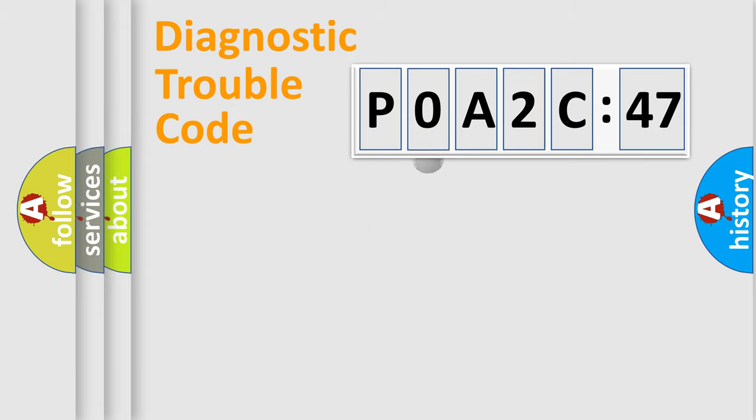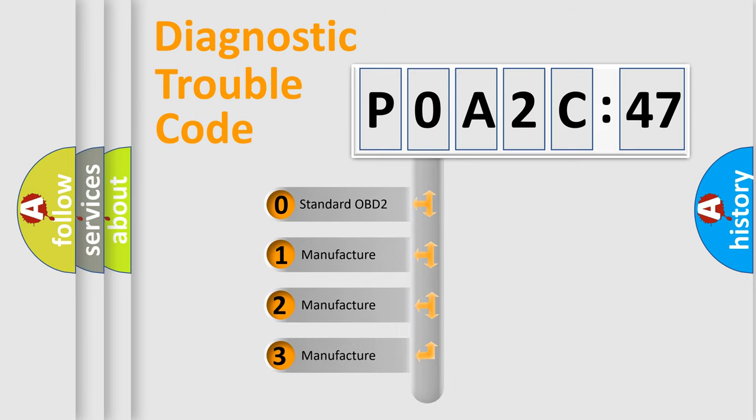The third character specifies a subset of errors. The distribution shown is valid only for the standardized DTC code.